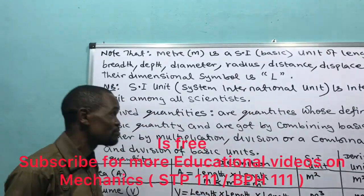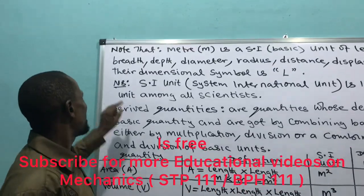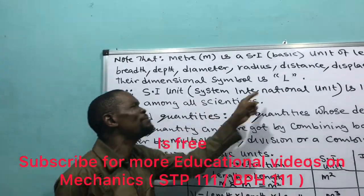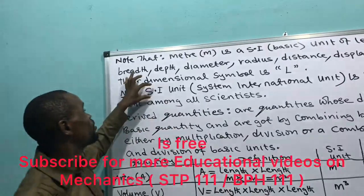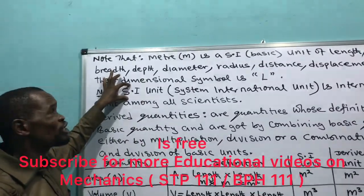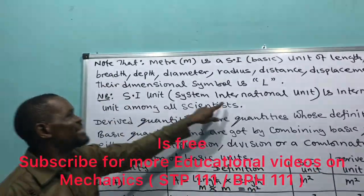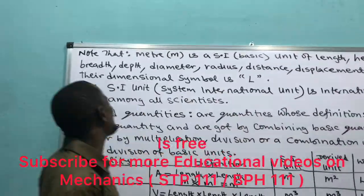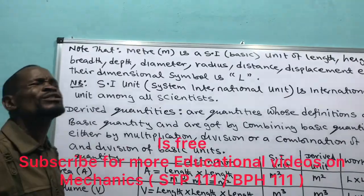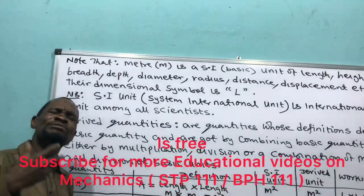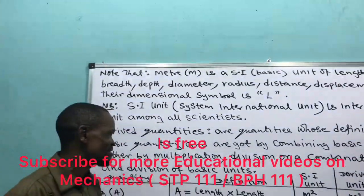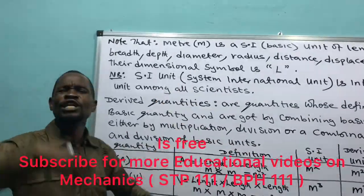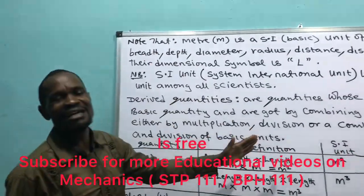Note that SI units means System International Unit — Système International. It is the internationally accepted standard unit among all scientists. Anywhere you go — in America, Japan, Europe — these are the standard units.